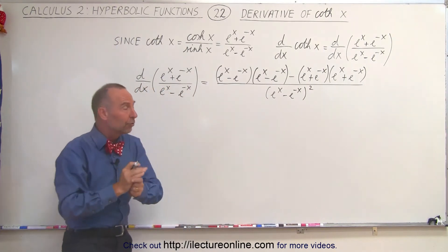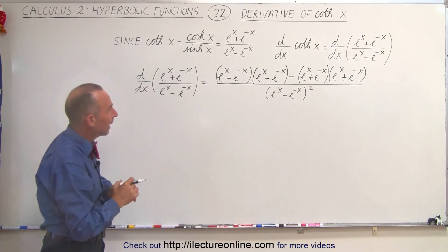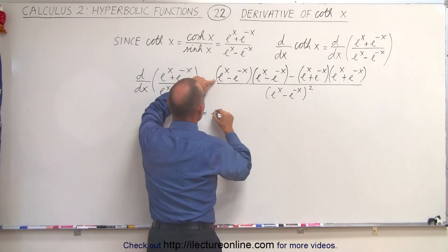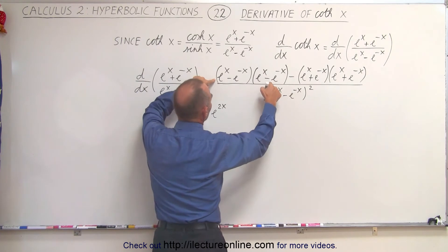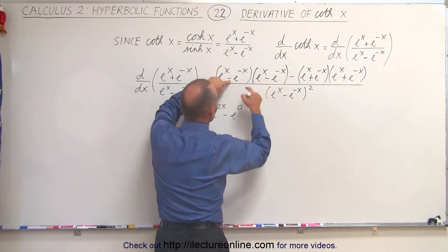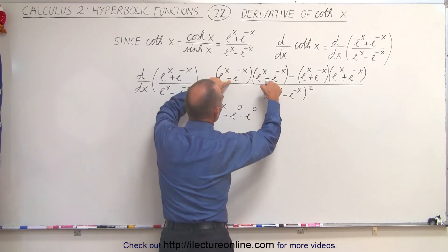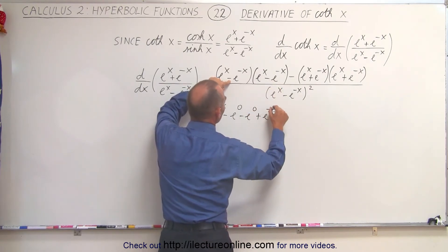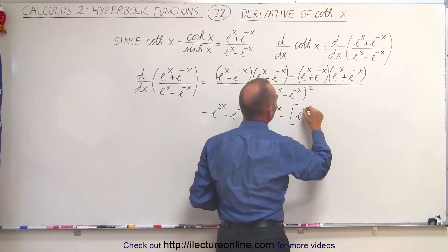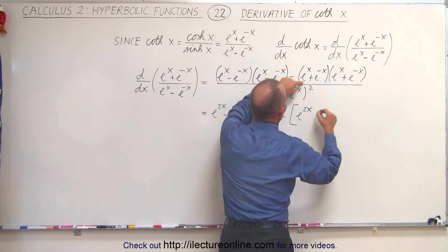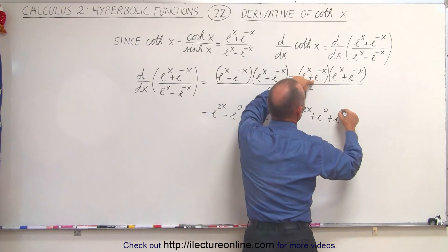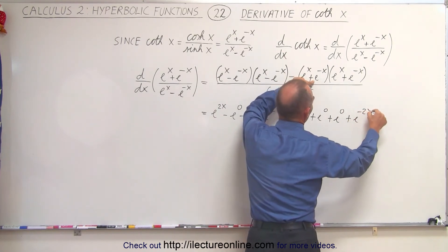Now we have to multiply out everything in the numerator and see what we can eliminate. This becomes e to the 2x, then minus e to the 0, minus e to the 0, and plus e to the minus 2x. Minus the product of all of these, which is e to the 2x, plus e to the 0, plus e to the 0, and plus e to the minus 2x.